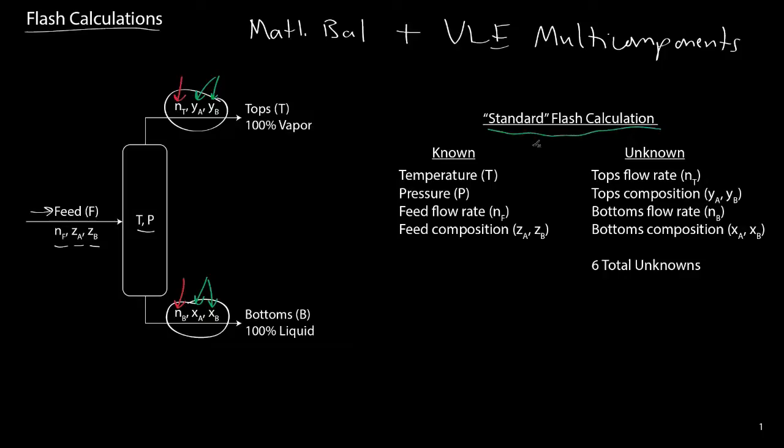We are trying to solve for the top composition and flow rate, and the bottom flow rate and composition. This gives us a total of six unknowns. Looking at the available equations we have in order to solve a flash calculation, we start by counting them.